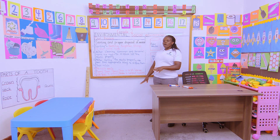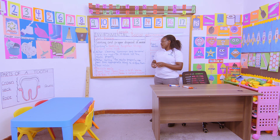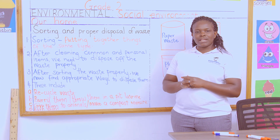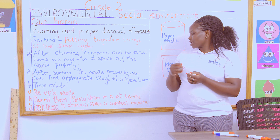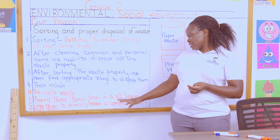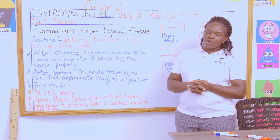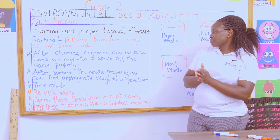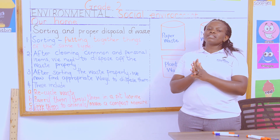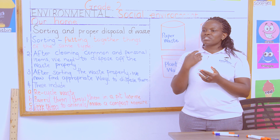Then you decide what will happen to each type of waste. Those that can be recycled — recycle them. For example, paper can be used to make paper mache. For those that can cause dangerous accidents, like metallic and glass waste, bury them or throw them in a pit latrine where people cannot reach them. For plant waste, make compost manure to add nutrients to plants, or give them to animals.